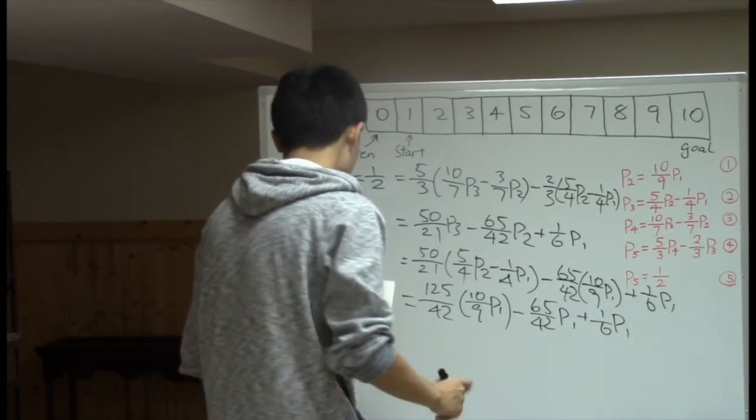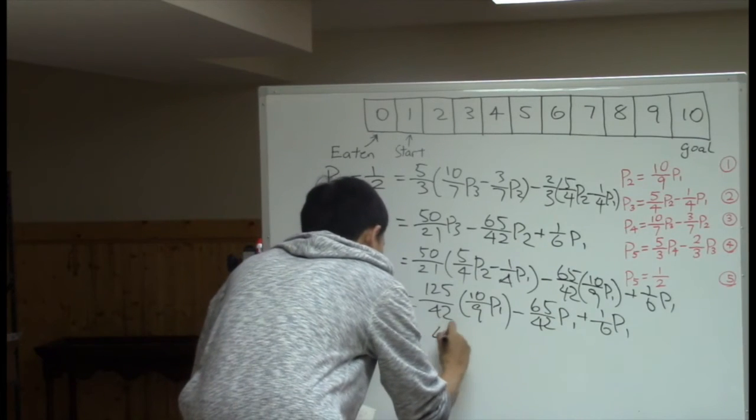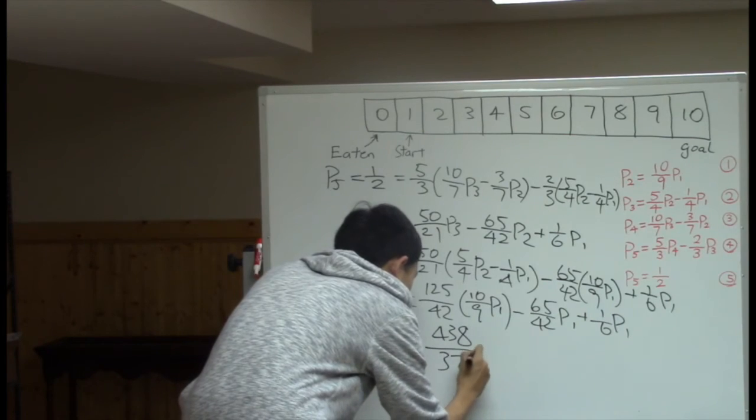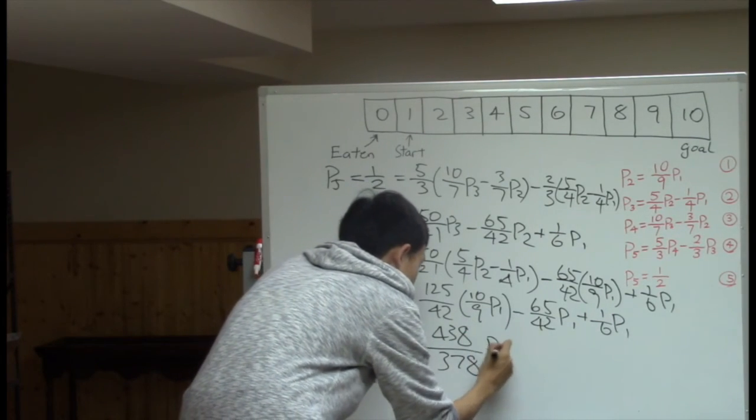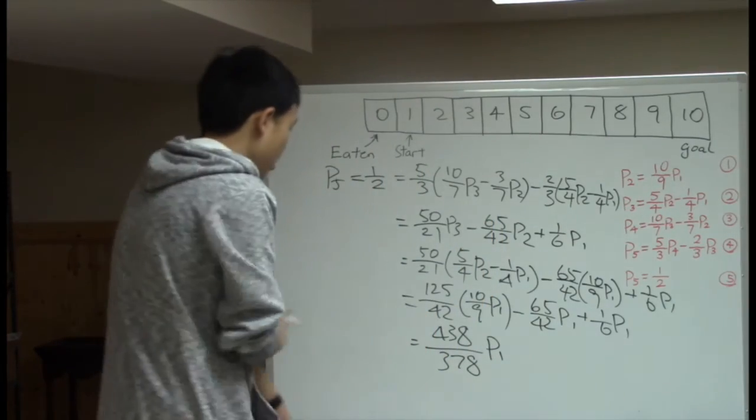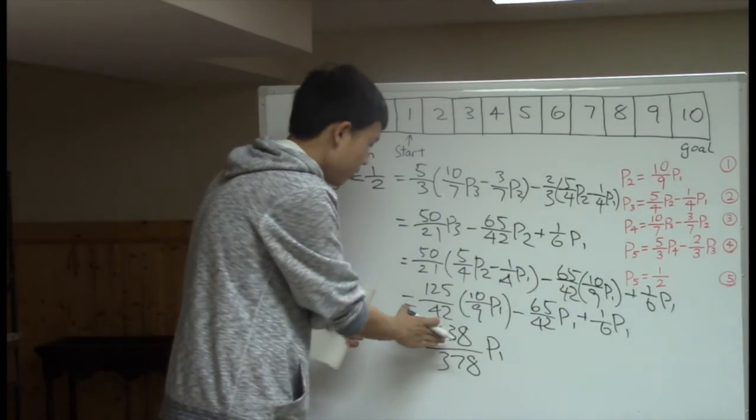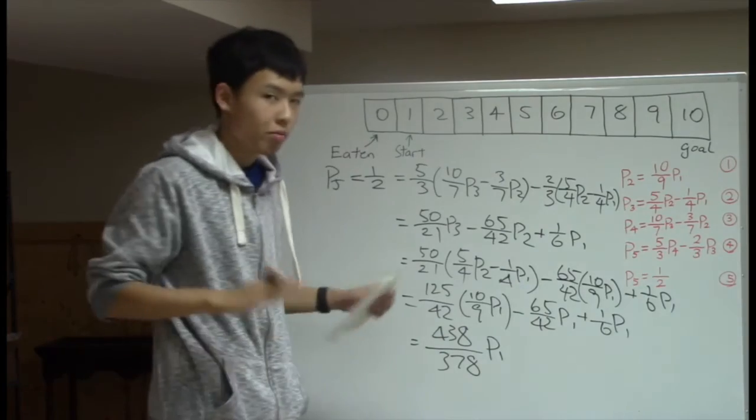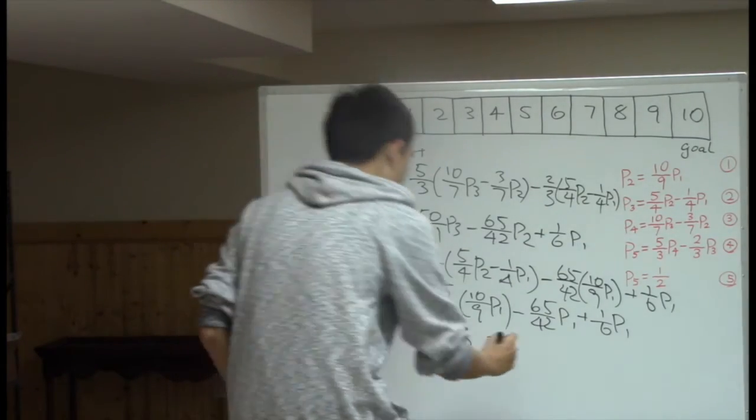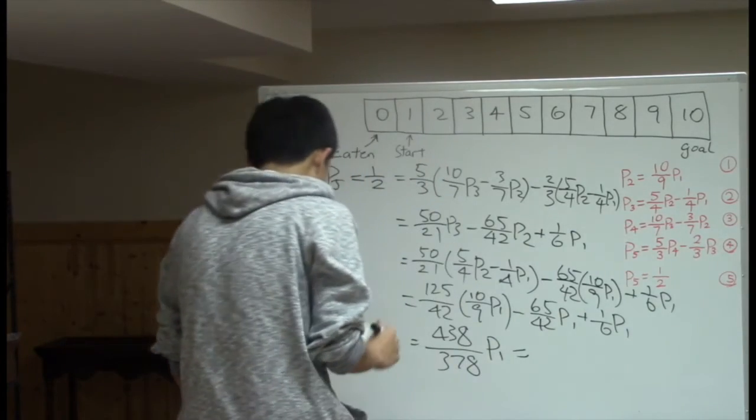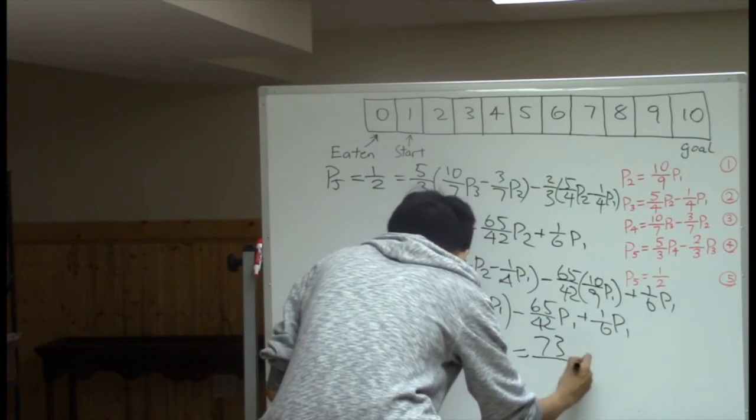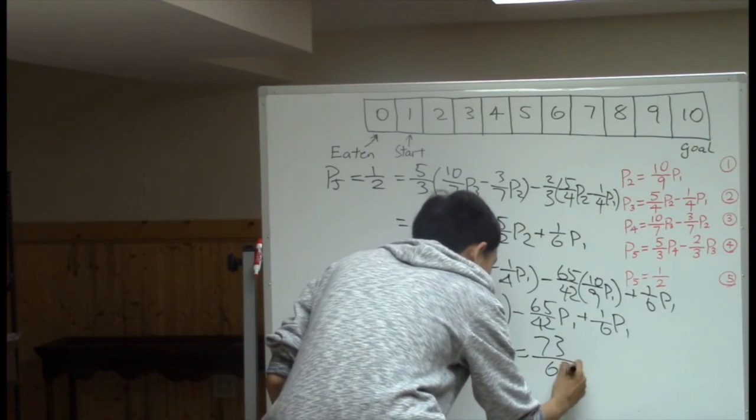So what we get is 138/378 p1. Now, obviously, 138, 378, they are all even numbers. So we can cancel something. And of course, 2. And at the end, we can actually cancel this to 73/63 p1.